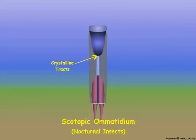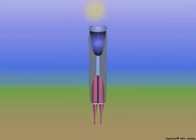The crystalline tracts act as light guides. In scotopic omatidia, incoming light is focused on the base of the crystalline cone and conducted to the rhabdom by the crystalline tracts.